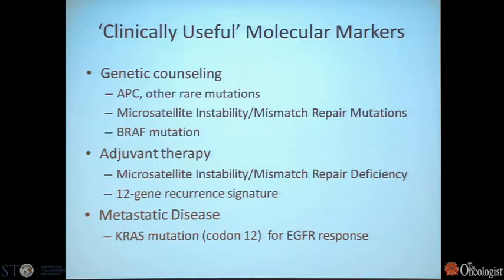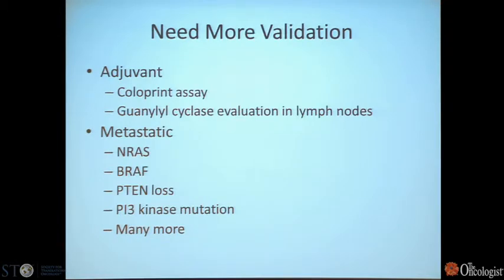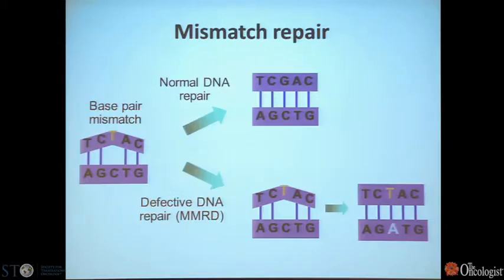In the adjuvant setting, decision making can again be dependent upon mismatch repair deficiency. Lisa spent a little bit of time talking about a multigene assay for breast cancer, the Oncotype assay. There's also a similar assay for colon cancer, and I'll talk about some of the uses there. I'm not going to spend much time on metastatic disease, but really our one useful therapy-driving marker has been KRAS in colon cancer. There are others that require more validation, some for adjuvant and some for metastatic.